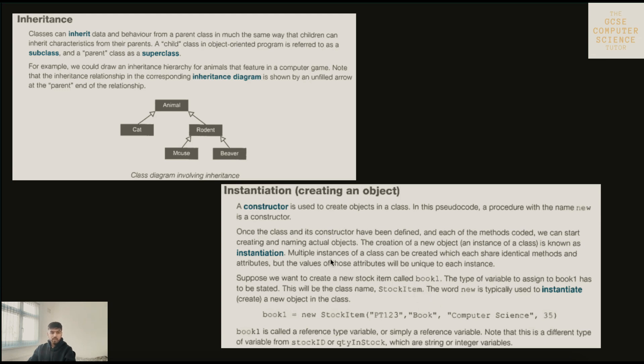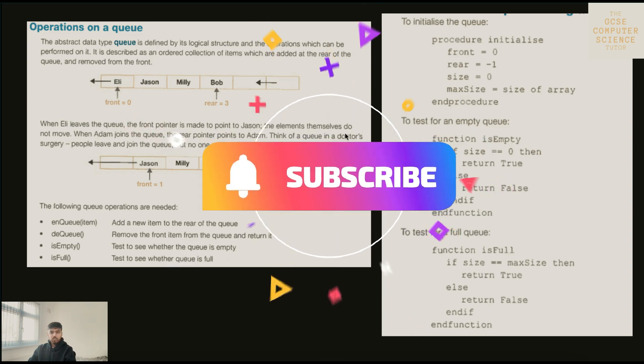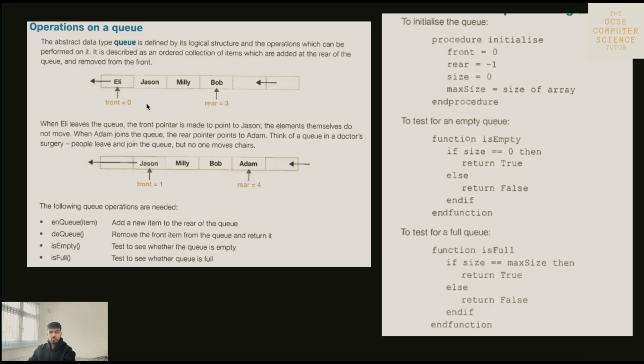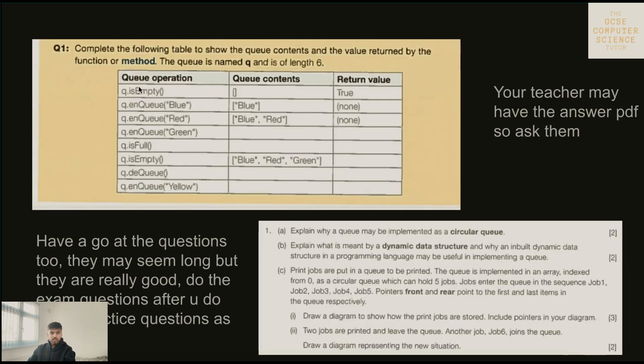If you know these things you can quickly get marks. Even the data structures - it literally tells you how queues work, how stacks work, how hash maps work, and it even tells you the pseudocode for it. The amount of questions that have pseudocode in paper two - the book literally tells you. If you remember these, just know how it works, it's enough to get the marks. Because if you know that for empty you have to check size equals zero, then return true, otherwise return false, you can recreate it in the exam.